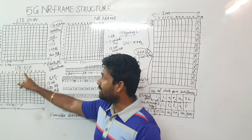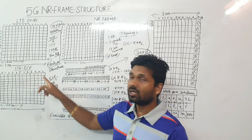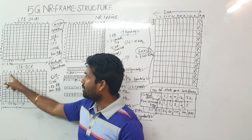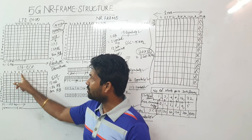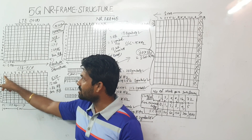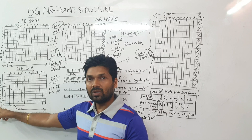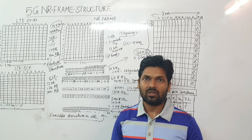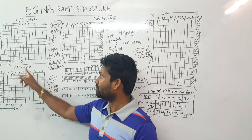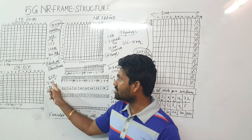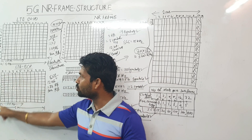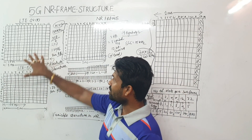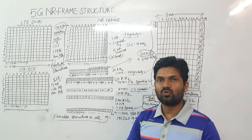For LTE extended cyclic prefix, we have a total of 12 symbols — so 6 symbols per slot versus 12 subcarriers in the frequency domain. That is one resource block. For extended cyclic prefix, one resource block has 6 symbols × 12 subcarriers = 72 resource elements.